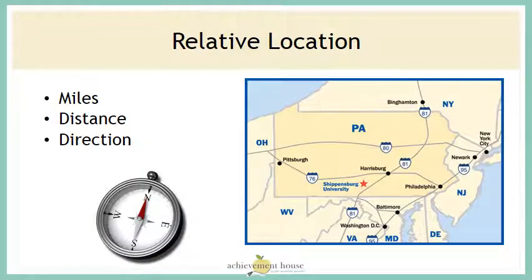Relative location has to do with how one place is located in relation to another. So for example, if I said Harrisburg is to my east, well then I would have to be standing west of Harrisburg. If I'm in Pittsburgh, Harrisburg is to the east. But if I'm standing in Philadelphia, Harrisburg's relative location would be to the west. Another example is if I said it's going to take you three miles to get to my house — it depends on where you're starting from. It's relative to where your starting point is.